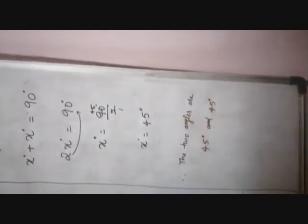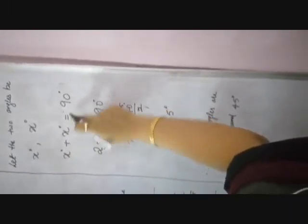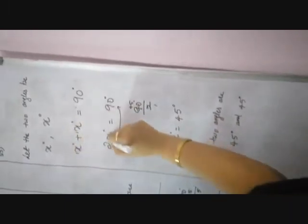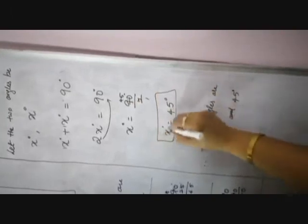It is very simple, children. Two angles are complementary to each other and equal, so we take them as x and x. Complementary means equal to 90 degrees, so x plus x equals 90 degrees, giving 2x equals 90 degrees, and x equals 45 degrees. So the two angles are 45 degrees and 45 degrees. Please complete your notes and submit. If you have any doubt, you can clarify with me on my personal window. Thank you.